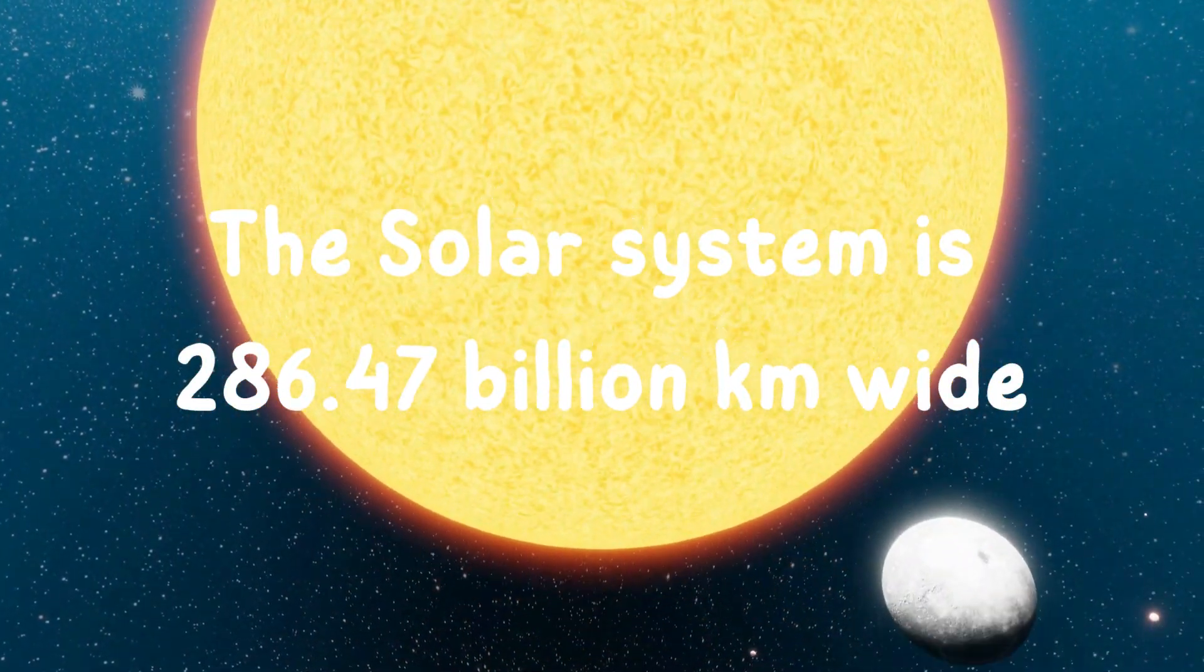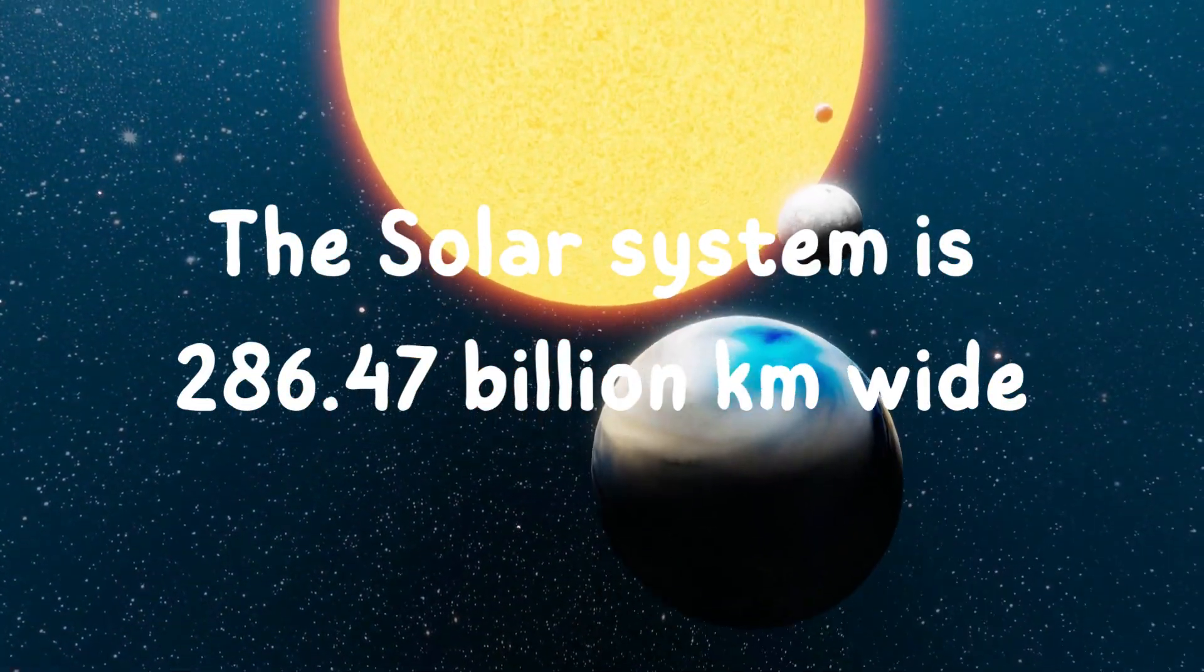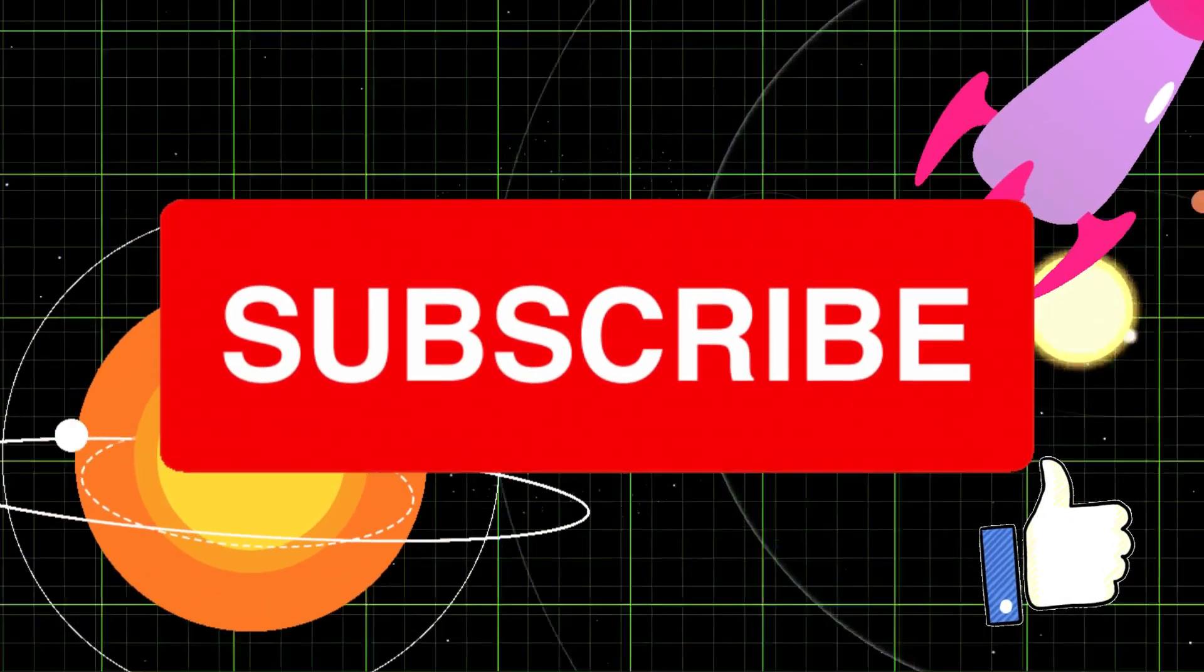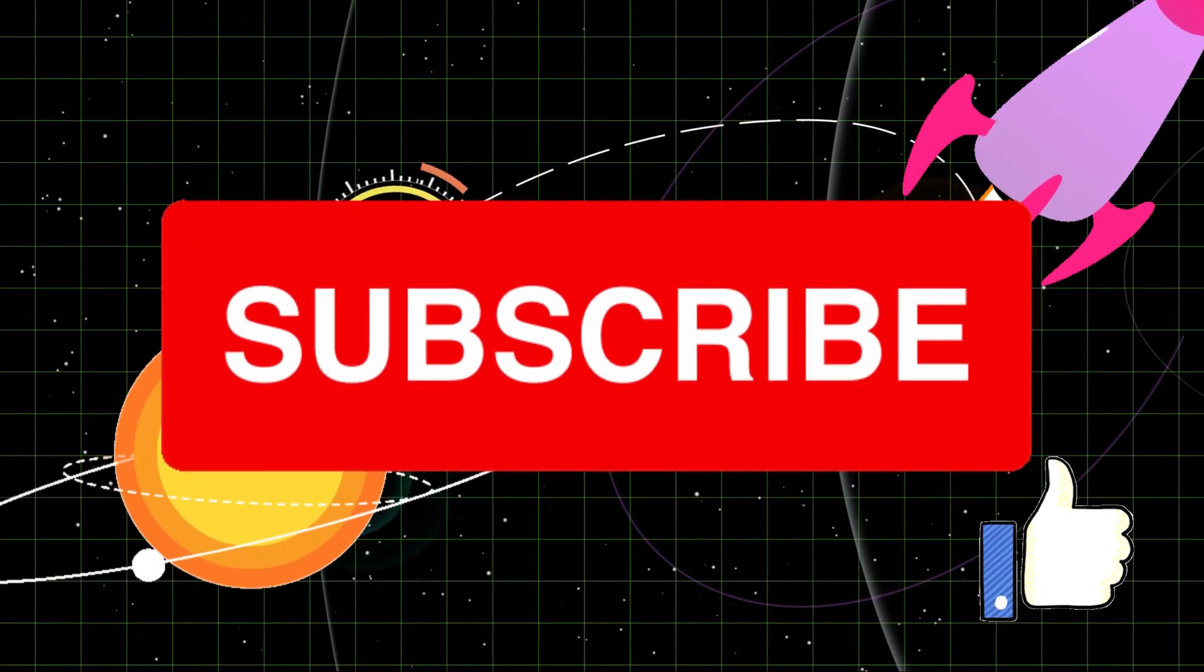The solar system is 286.47 billion kilometers wide. Thank you for watching, kids. Be sure to like, subscribe, and share.